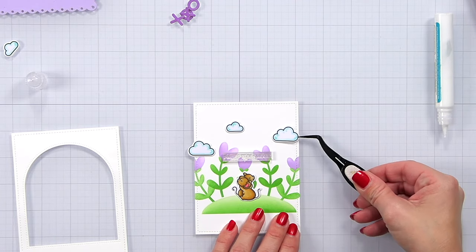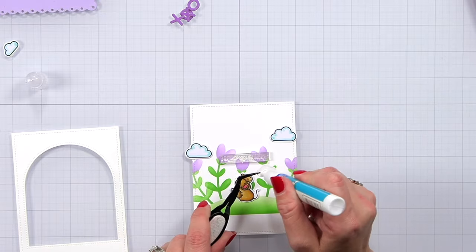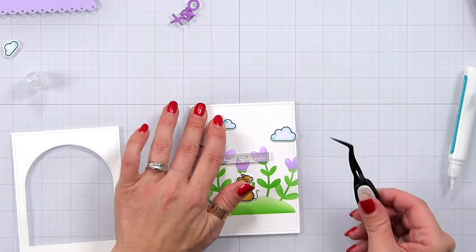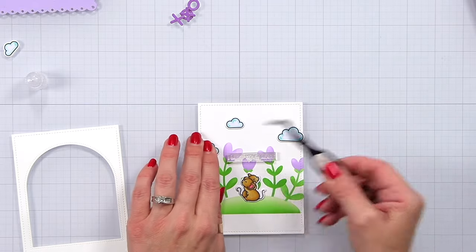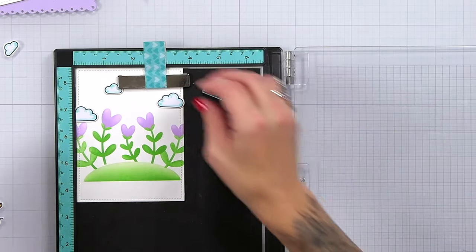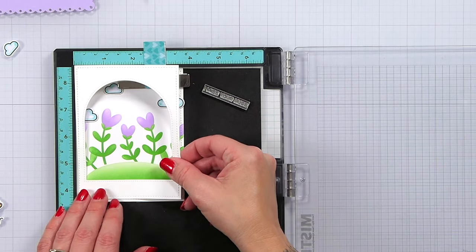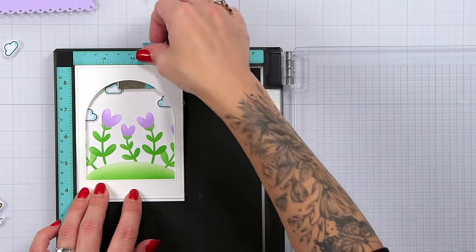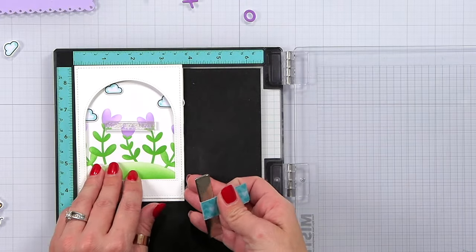While my bow is drying I'm going to start building my scene a little bit. I started by placing my clouds about where they're going to be in my window. I had them lined up just where they're going to be peeking in. I also have a smaller sentiment there that I want to stamp. So I'm going to bring this all over to my MISTI and hold that down with my magnet, use that window as a guide so I know about where I'm going to stamp that smaller sentiment.